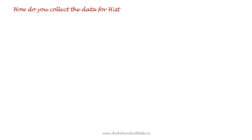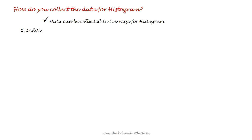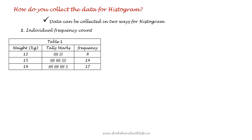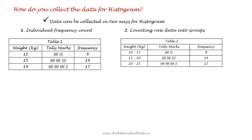How do you collect the data for a histogram? Data can be collected in two ways for a histogram. The first method is individual frequency count. In this method, the frequency of every observation is counted individually using tally marks, as shown in Table 1.